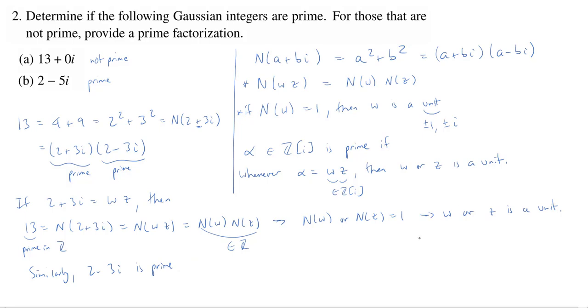So this confirms that 2 plus 3i is prime and, of course, similarly, 2 minus 3i is prime. This implies 2 plus 3i is prime in ℤ[i], and similarly here in ℤ[i].